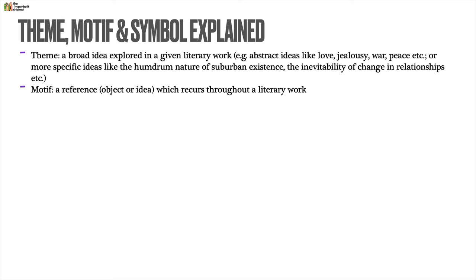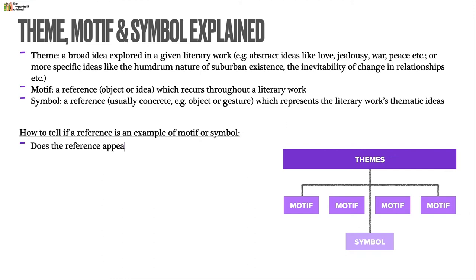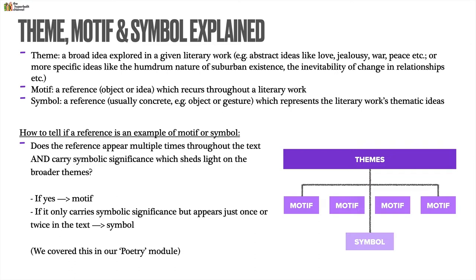Motif and symbol are essentially references that support or shed light on themes. A motif is a reference in the form of an object or idea which recurs throughout a literary work, whereas a symbol is usually a concrete reference — like an object or gesture — which represents the work's themes but appears just once or twice. The key difference is frequency: if a reference appears multiple times and carries symbolic significance, it's a motif; if it's symbolic but appears rarely, it's a symbol.